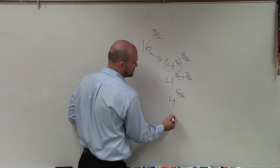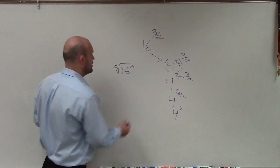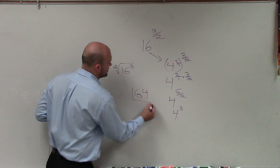So I have 4 to the 6 over 2. 6 divided by 2 is 3, so I have 4 to the third power, which gives me a final answer of 64.